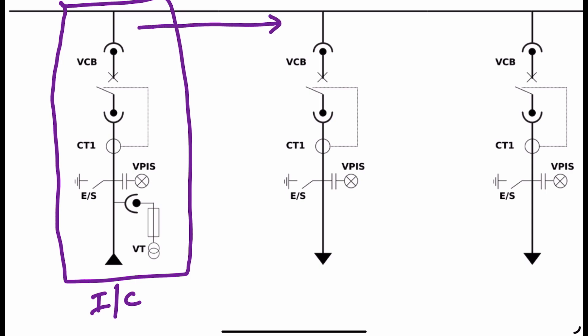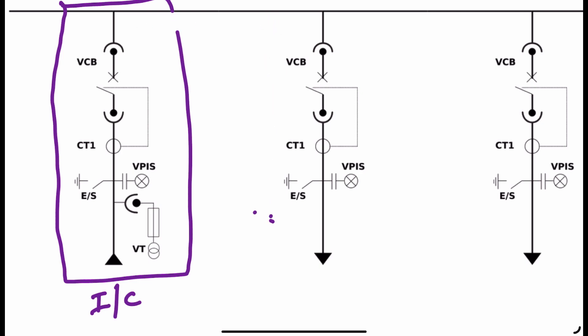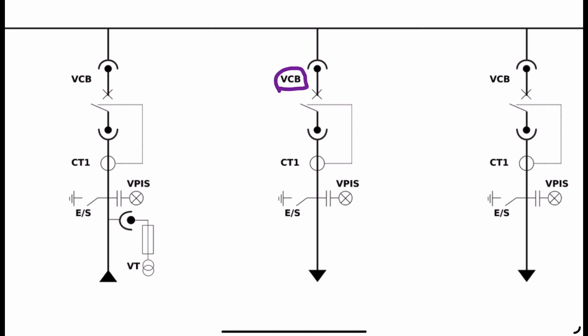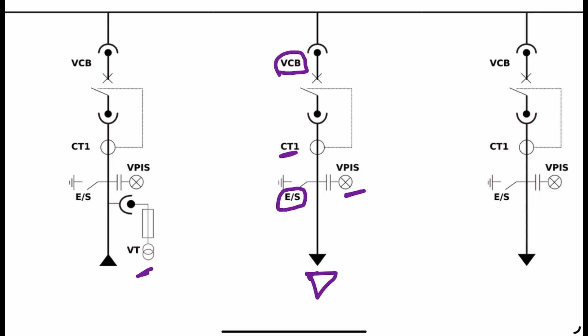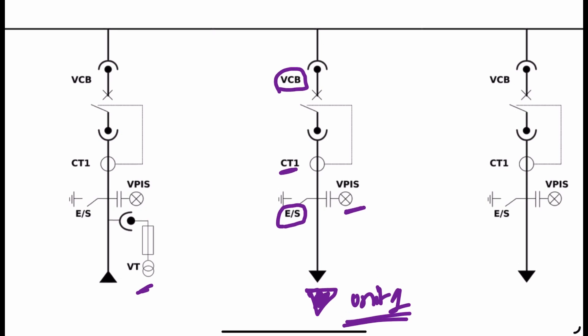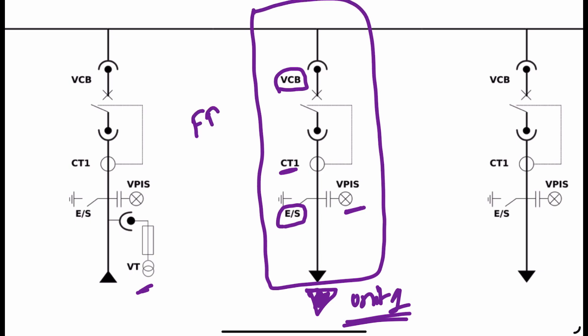The supply flows from the incomer panel to the next panel. Here we have another vacuum circuit breaker — again a withdrawable type — with a current transformer providing input to it. We also have a Voltage Presence Indication System and an earthing switch for safety. Notice that here we do not have a voltage transformer, because we are already measuring the incoming supply. The downward-pointing symbol indicates the cables are going out to manufacturing unit one. This panel is called Feeder One panel.